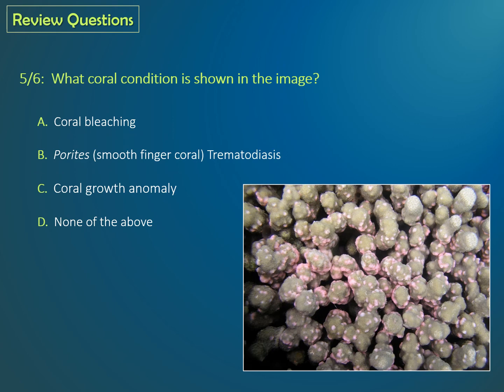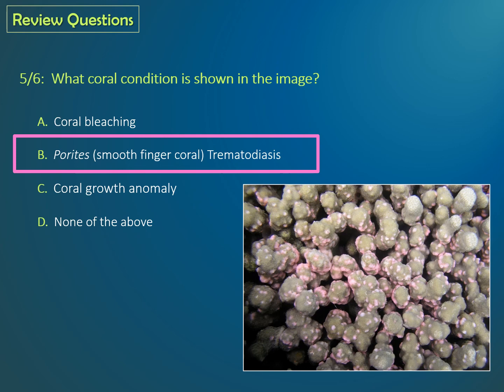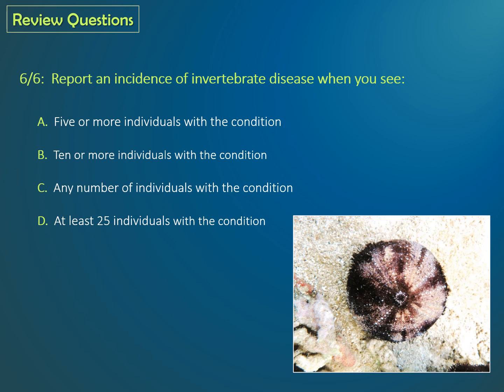Question 5: What coral condition is shown in this image? Is it A, coral bleaching; B, Parites Trematodiasis; C, coral growth anomaly; or D, none of the above? If you said B, Parites Trematodiasis, you are correct. Last question, Question 7: Report an incidence of invertebrate disease when you see A, five or more individuals with the condition; B, 10 or more individuals with the condition; C, any number of individuals with the condition; or D, at least 25 individuals with the condition. If you said B, 10 or more individuals with the condition, you are correct.